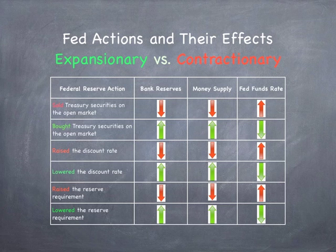Expansionary policies are in green and contractionary policies are in red. If the Federal Reserve sold treasury securities on the open market, raised the discount rate, or raised the reserve requirement, the bank reserves would decrease, the money supply would decrease, and the federal funds rate would increase.